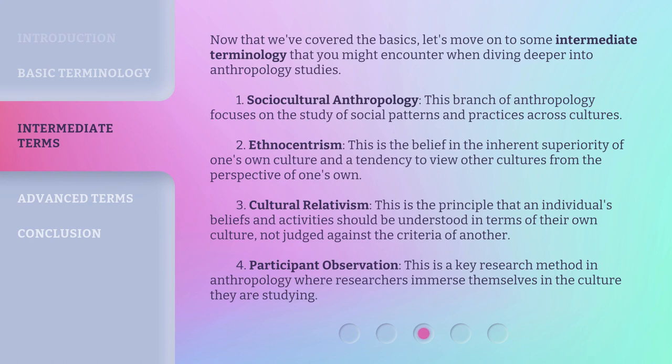Now that we've covered the basics, let's move on to some intermediate terminology that you might encounter when diving deeper into anthropology studies. 1. Sociocultural Anthropology: This branch focuses on the study of social patterns and practices across cultures. 2. Ethnocentrism: This is the belief in the inherent superiority of one's own culture and a tendency to view other cultures from the perspective of one's own. 3. Cultural Relativism: This is the principle that an individual's beliefs and activities should be understood in terms of their own culture, not judged against the criteria of another. 4. Participant Observation: This is a key research method in anthropology where researchers immerse themselves in the culture they are studying.